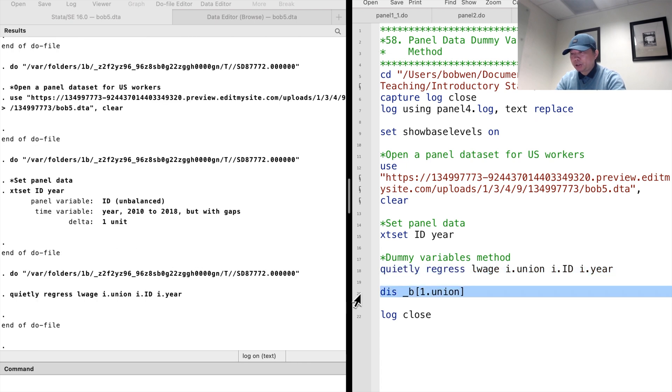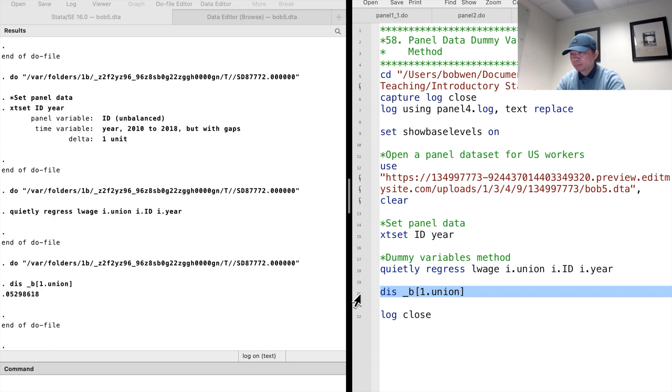The estimate for the union is stored in the scalar _b[union]. It implies that union members earned 5% more than non-union members, on average, after controlling for individual and time-fixed effects.